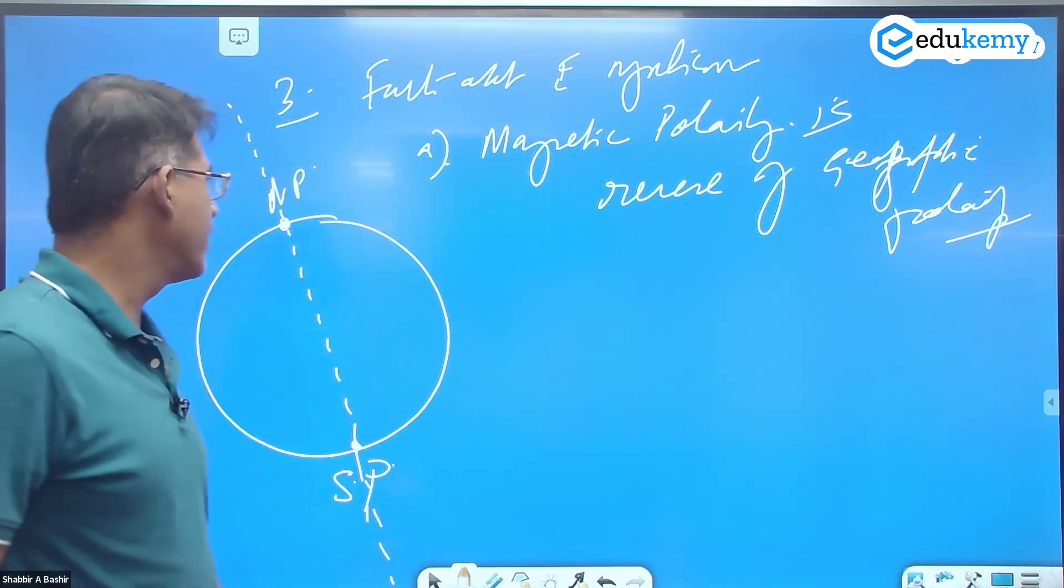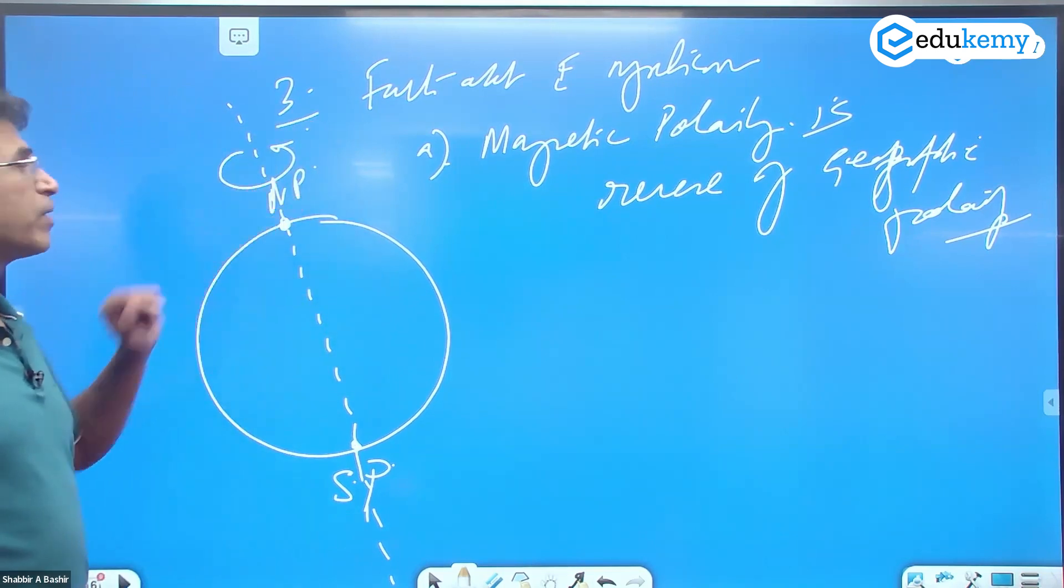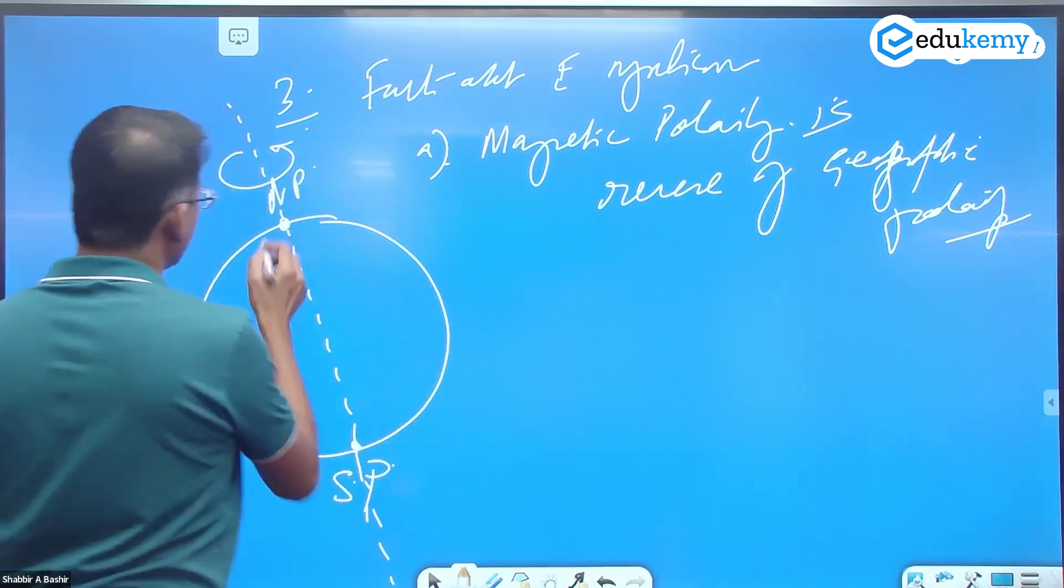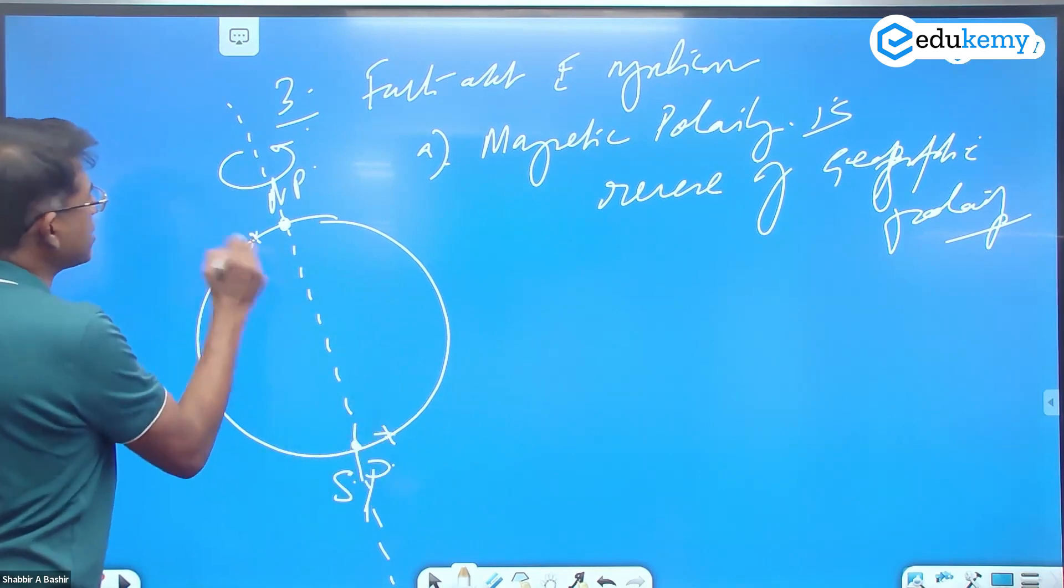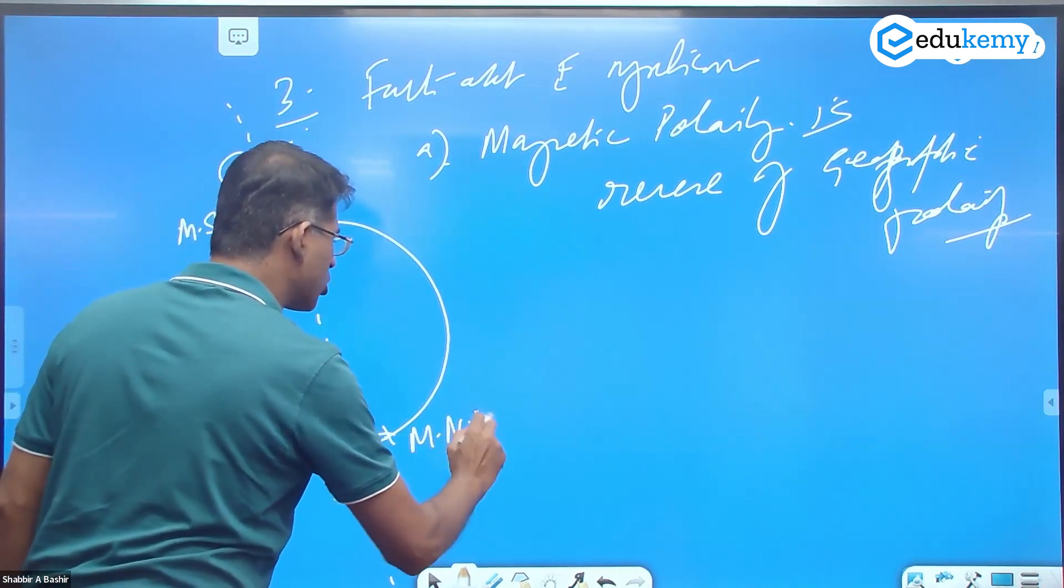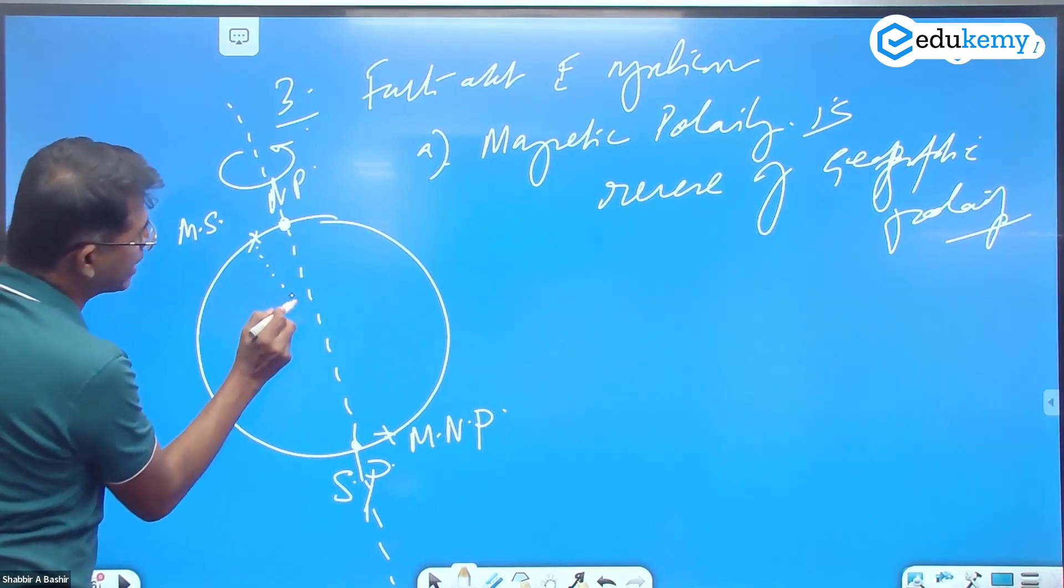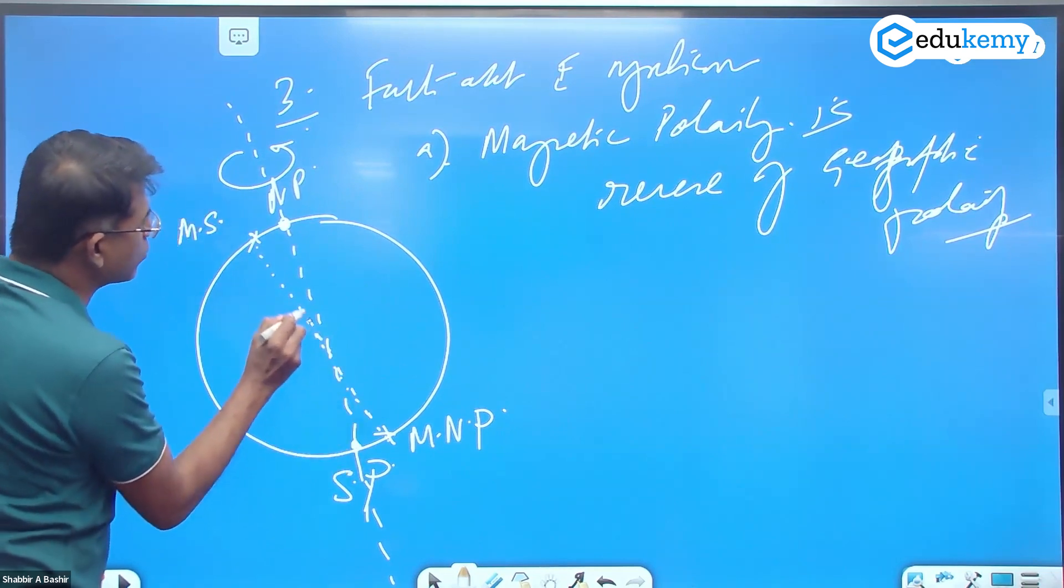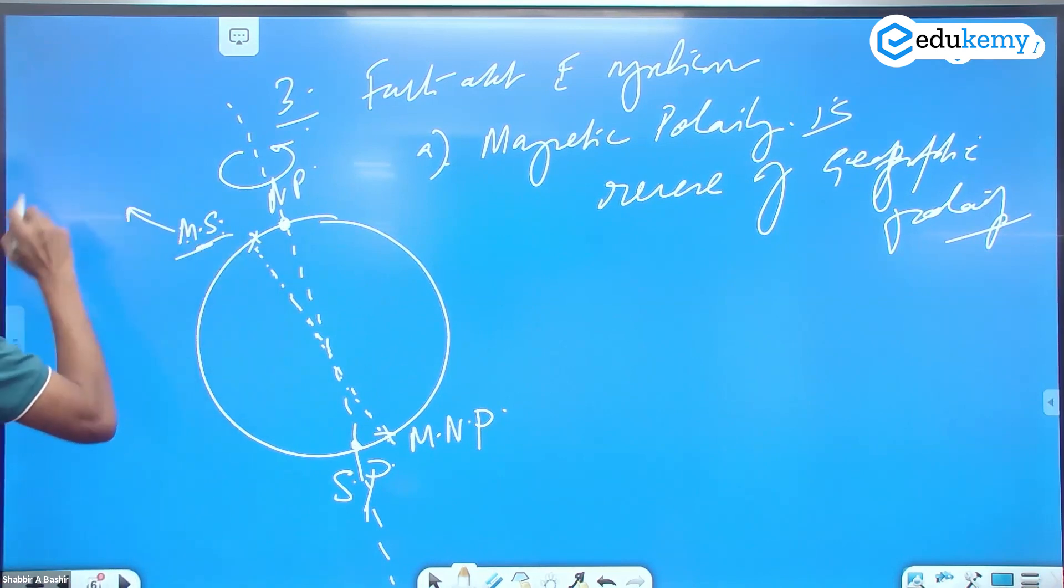It is where Earth's rotation axis intersects the surface. So this is the geographical north pole, and the magnetic poles don't coincide - they're at a distance. This is the magnetic south pole and this is the magnetic north pole. The polarity in terms of the magnetic field is opposite to that of the geographic poles. The magnetic south pole is in Canada on an island called Bathurst Island.